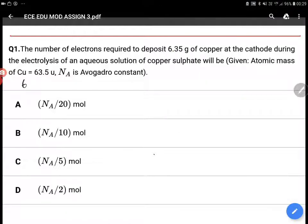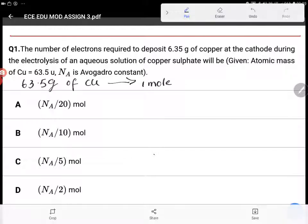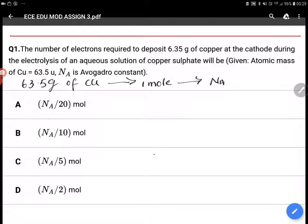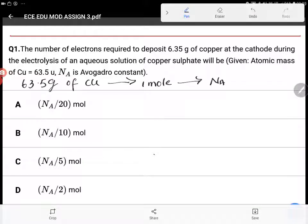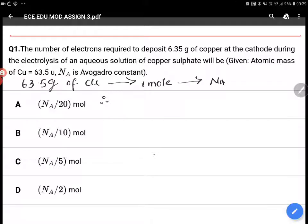63.5 grams of copper is available in one mole, and that is equal to Avogadro's number. Therefore, 6.35 grams of copper will give you 0.1 mole.